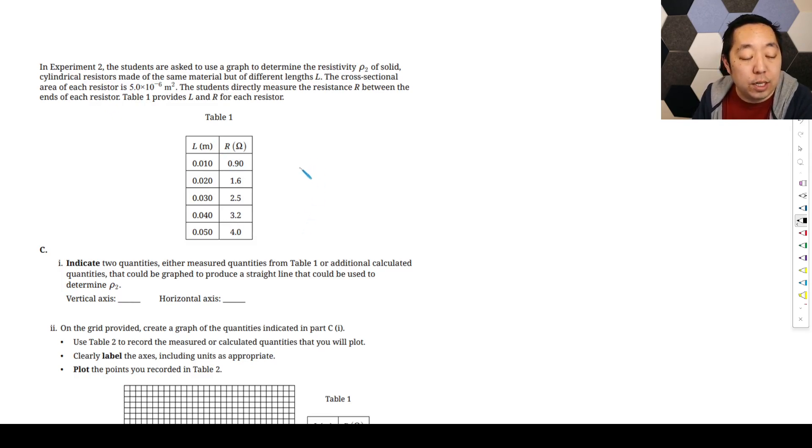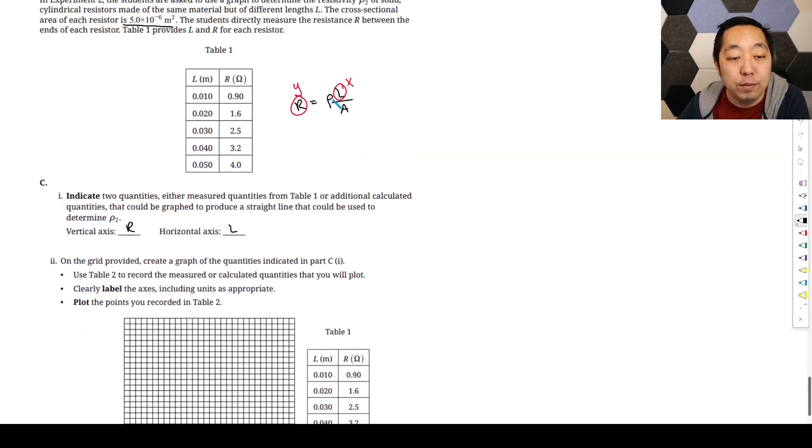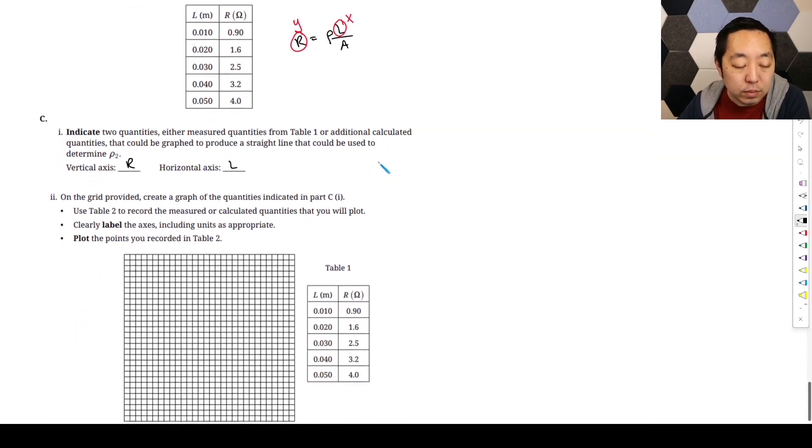Indicate two quantities that can be measured that can produce a straight line. Your resistance is ρL over A. There's a lot of ways to do this. You could just plot R and L directly, and then just do ρ over A, because they're giving you the area. This will be my Y variable, this will be my X variable, my slope will be ρ over A, and A is a constant value. I'm just being lazy here because I don't have to calculate any new values, just do a calculation on the slope.